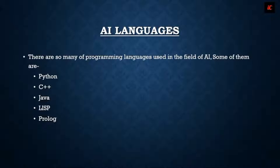Some of them are Python, C++, Java, Lisp, and Prolog. These are the kind of languages that will help you to create artificial intelligence.